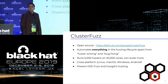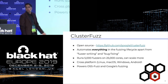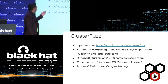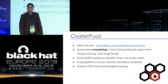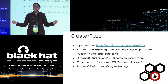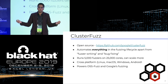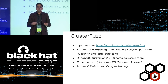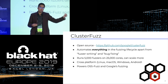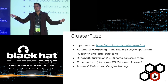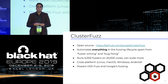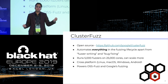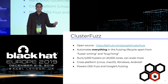ClusterFuzz is an implementation of this fuzzing workflow. It has been open sourced in February of this year and is actively developed and maintained. It automates everything in this fuzzing workflow except fuzzer writing and bug fixing. It has been tested at scale for smaller projects with a few dozen cores all the way to a wide variety of projects on tens of thousands of cores. It's the only public example of infrastructure that runs on all popular platforms — Linux, Mac, Windows, and Android — and it powers our OSSFuzz service and all of Google's fuzzing.